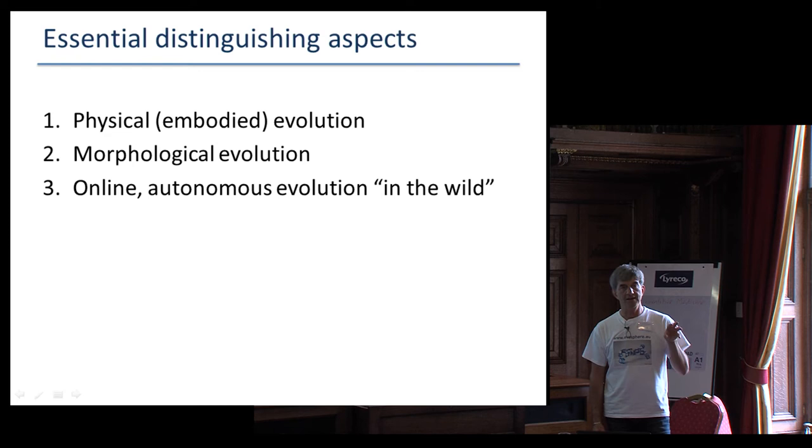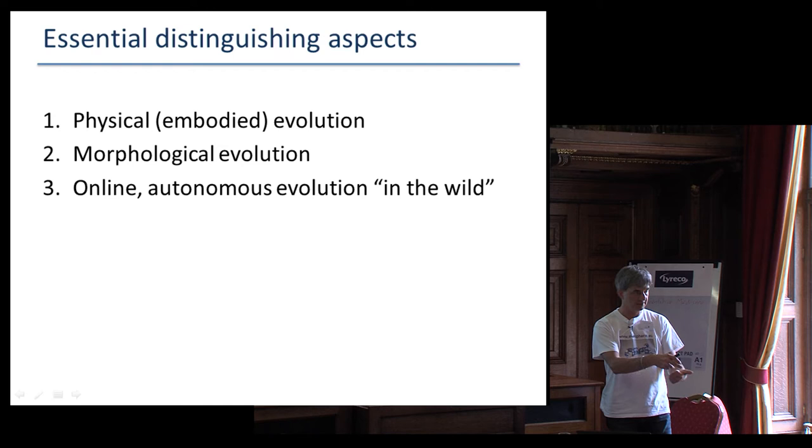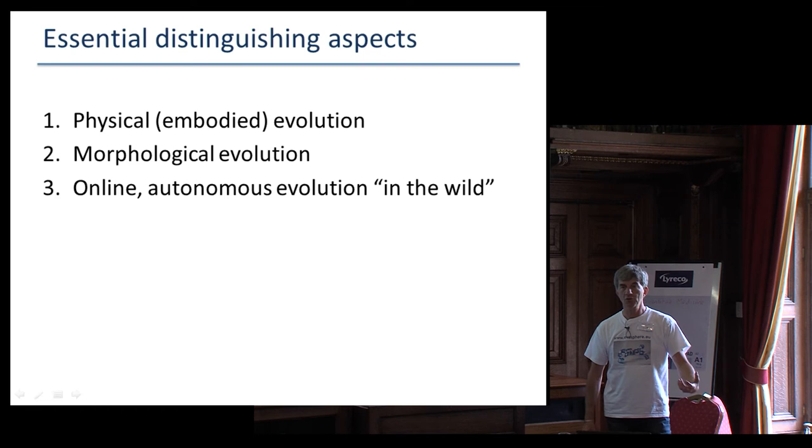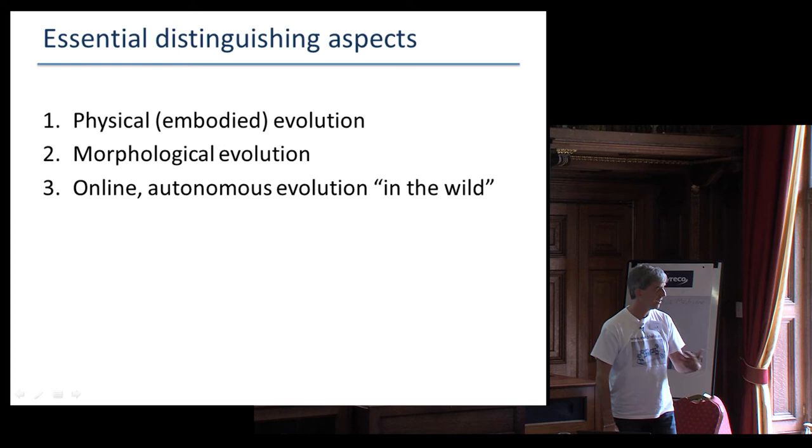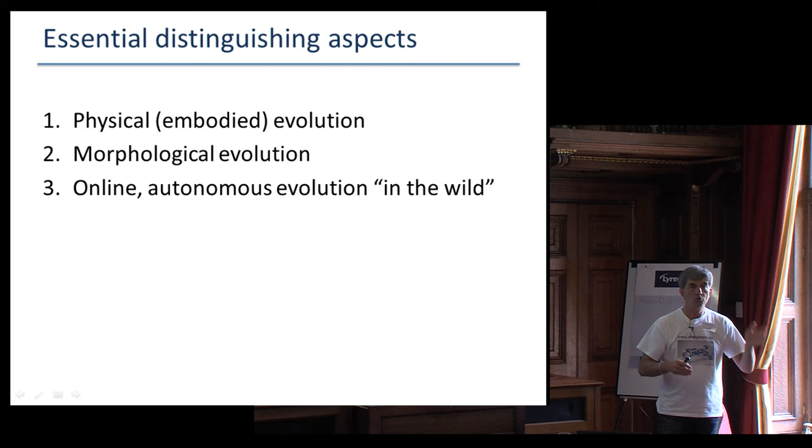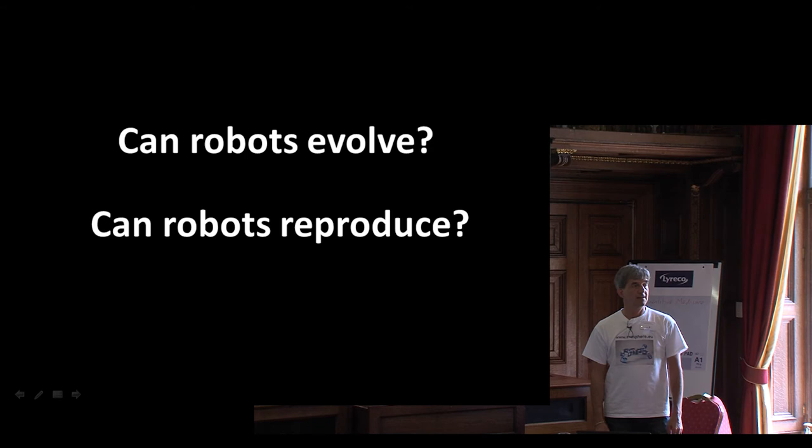So in this vision, in this research vision, there are a couple of essential distinguishing aspects. It must be physical evolution embodied in real objects, tangible objects. It will be morphological evolution and not only the brains, the software, but also the construction, the bodies and the morphology will evolve. And it should be online autonomous evolution in the wild. It could be under human supervision, if for nothing else, just to observe the system. But we want the human out of the loop so that the robots will be capable of evolving themselves on Mars or wherever. So this brings up the right question, is this possible? Can robots evolve?